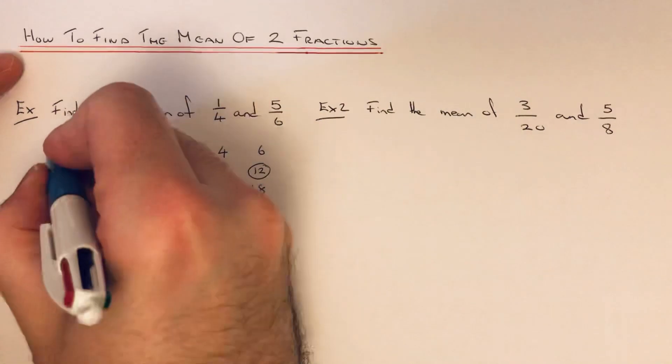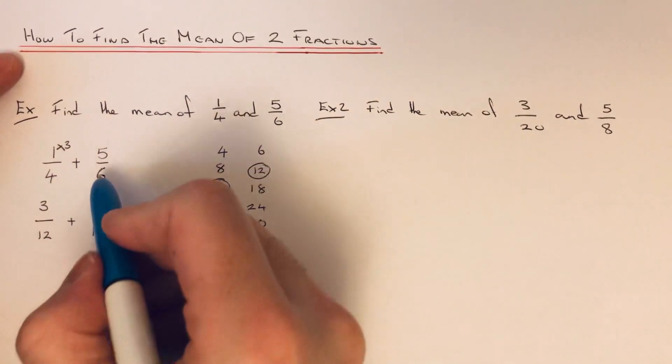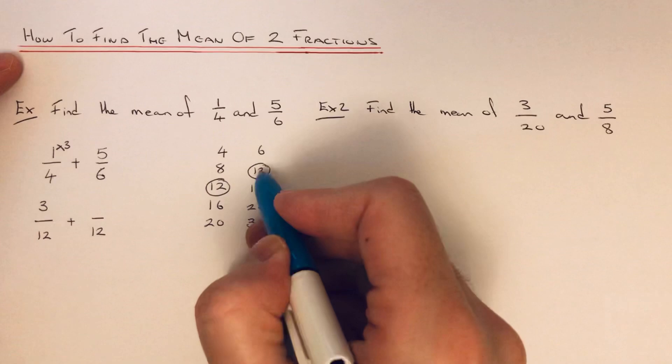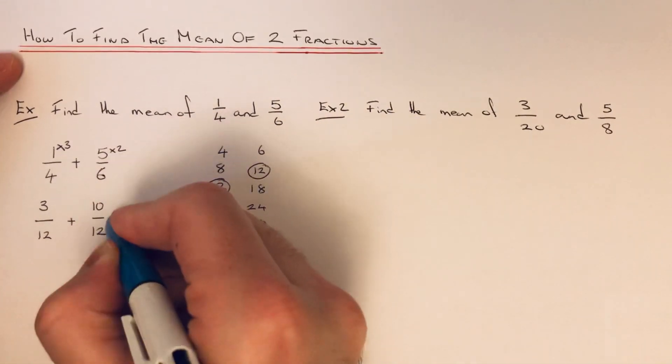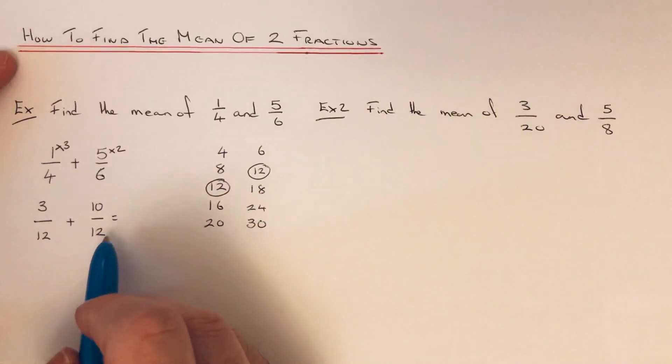So how many times does 4 go into 12? That's 3, so we times this top number by 3. And times the 6 going to 12, that's 2. Times 3, times this number by 2. 5 times 2 is 10.